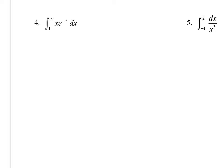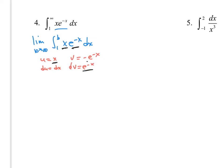For number 4, pause and try this one. There's something extra needed for the antiderivative that you learned in Unit 6 — integration by parts. We have two parts: x and e to the negative x. Let u = x because we can differentiate that down, and dv = e^(-x) dx. Taking the antiderivative gives v = -e^(-x).